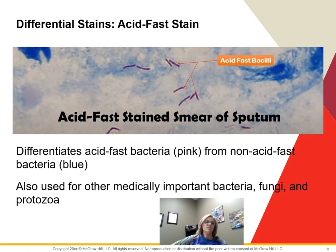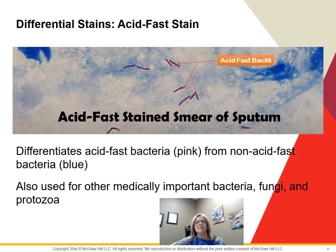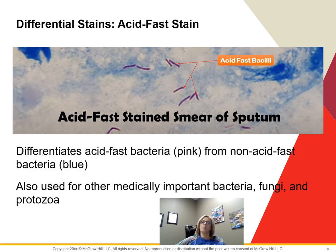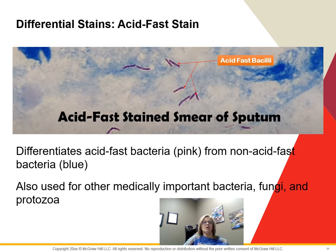The acid-fast stain differentiates between acid-fast bacteria, which appear pink, and non-acid-fast bacteria, which appear blue. It was developed to detect Mycobacterium tuberculosis — these bacteria have cell walls that are impervious to dyes used in other methods and cannot be stained with a regular gram stain. They hold fast to a particular dye called carbolfuchsin even when washed with an acid-alcohol decolorizer — that's where the name comes from. This stain is also used for other medically important bacteria, fungi, and protozoa. We do not do this one in the in-person lab, but online we do.